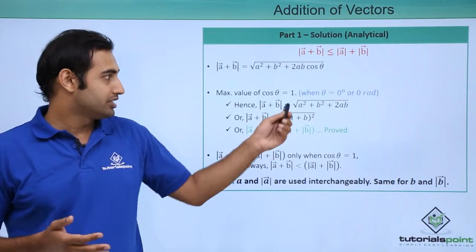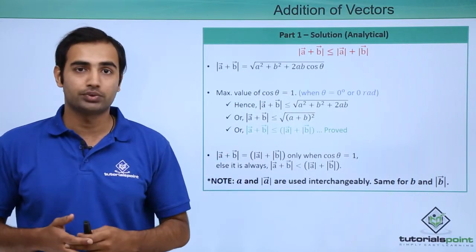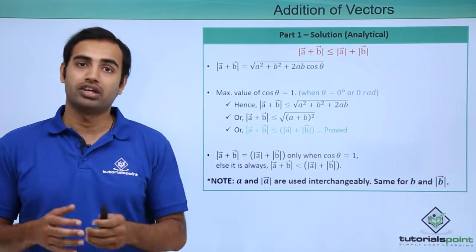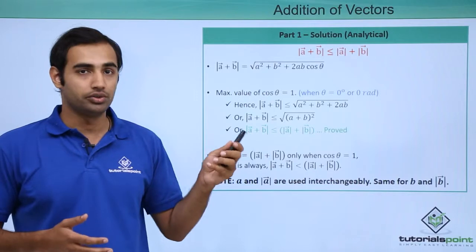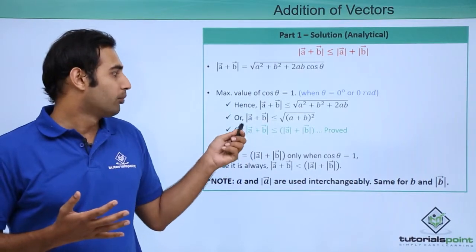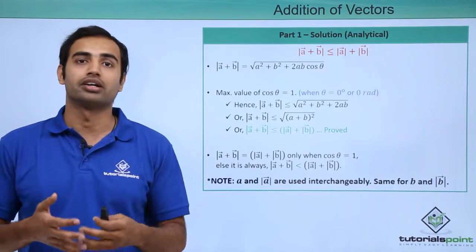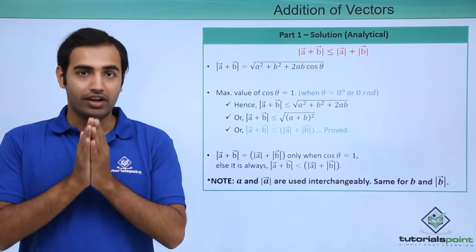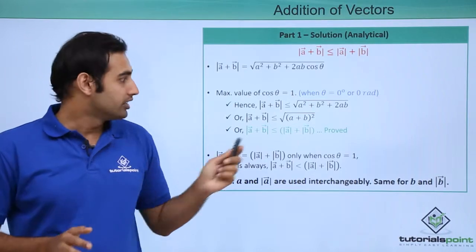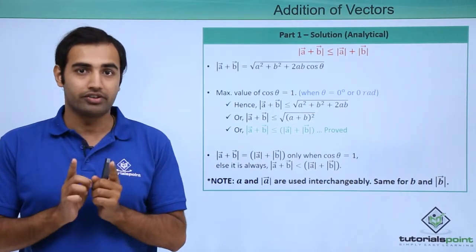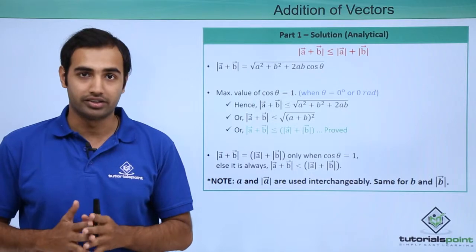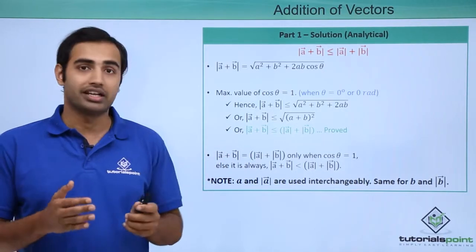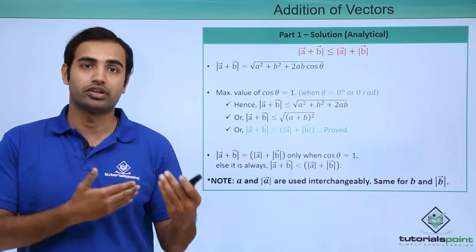This expression is the perfect square of A plus B. So I can write it as modulus of A plus B is less than or equal to the square root of (A plus B) whole squared, which gives the result: modulus of A plus B is always less than or equal to mod A plus mod B. This equality holds only when theta equals 0 radians; for all other angle values, mod of A plus B is strictly less than modulus of A plus modulus of B.